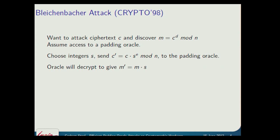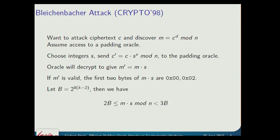We're going to send a new ciphertext equal to C multiplied by S raised to the encryption exponent E, modulo N, to the padding oracle. The oracle decrypts that and works out M prime. M prime, by the properties of this operation, is equal to M times S. If the oracle tells us that the result M prime is a correctly padded plaintext, then we know that the first two bytes of M times S must be equal to 0x00, 0x02.